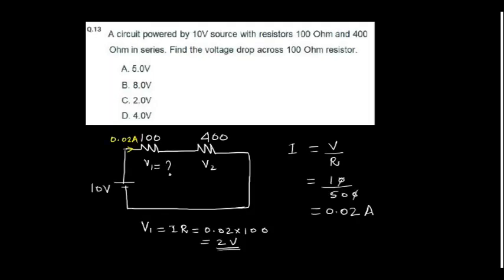A circuit powered by 10V source. Find the voltage drop across 100 ohm resistor. So what you will do? You will find the total resistance of the circuit. Then V upon total resistance will give the total current. When that total current flows through this 100 ohm resistor, what is the drop across the resistor? Answer is 2V.